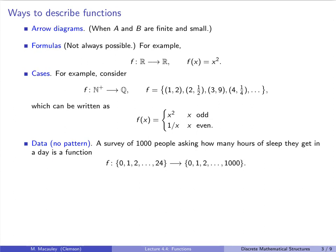Sometimes functions come from data and there really is no pattern. Consider a survey of 1,000 people asking how many hours of sleep they get in a day. That's a function F from the integers 0 up to 24, where the output is an integer between 0 and 1,000 — F(n) is the number of people who get n hours of sleep. There's no formula for this; you just have to write the data down in a spreadsheet.